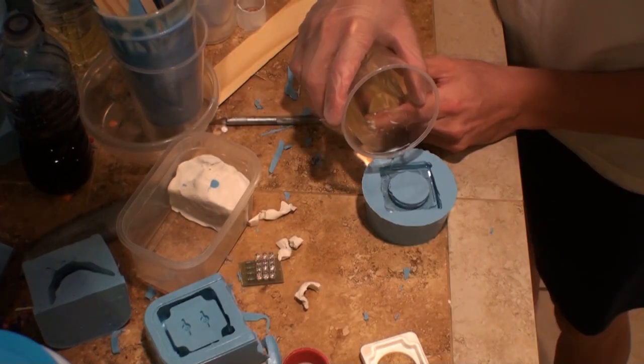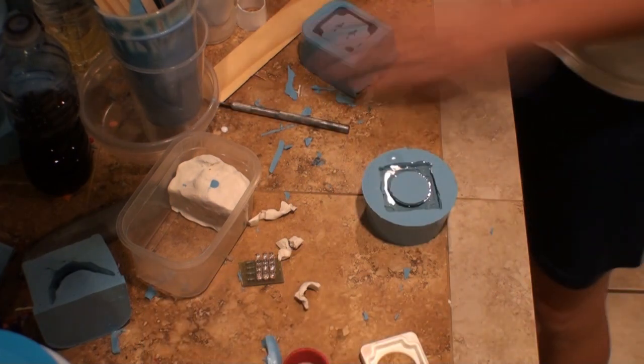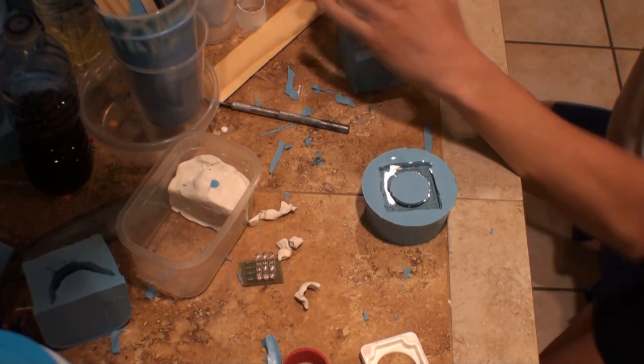Now that I have the molds made, it's time to cast the housings out of plastic. I'm just using another two-part, a one-to-one mixture of a bright white plastic that'll set up in about 10 to 15 minutes. It's actually pretty quick.